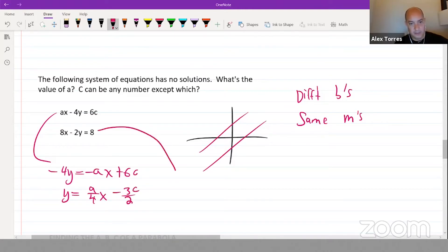For the other one, take away 8x from both sides and divide by negative 2. Now we've got the equations of the two lines. For there to be no solutions, the slopes have to be the same, so a over 4 has to be equal to 4, which means that a is 16.